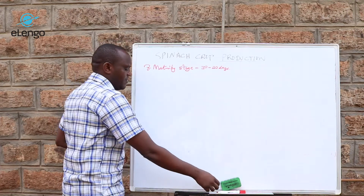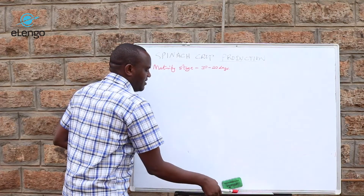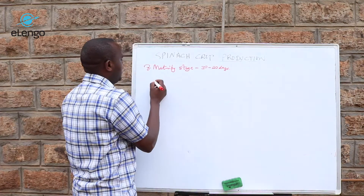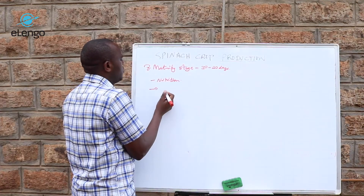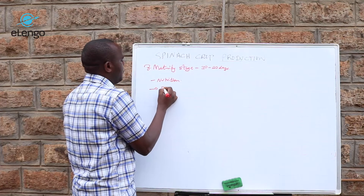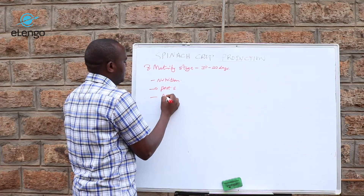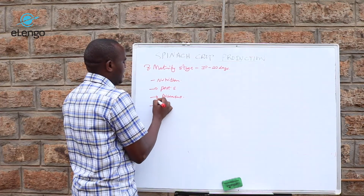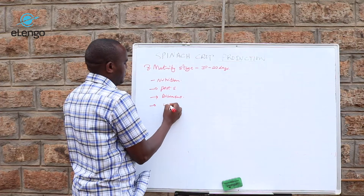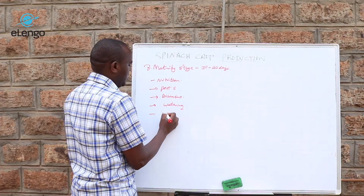In the maturation stage, the key aspects to look at are still nutrition, pests, diseases, watering, and also weeding.